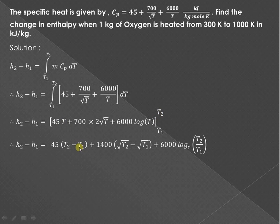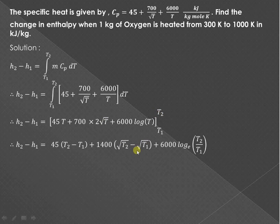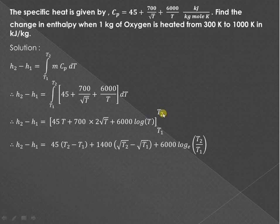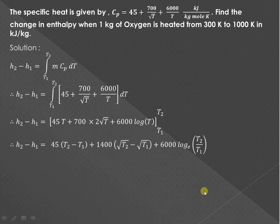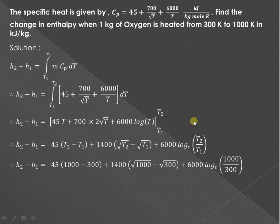Substituting the limits: for the 45T term we get 45(T2 - T1); for the 700·2√T term that is 1400, we substitute the upper limit √T2 minus √T1; and for the 6000·log T term we substitute log T2 minus log T1. Since log m minus log n equals log(m/n), this becomes log(T2/T1).